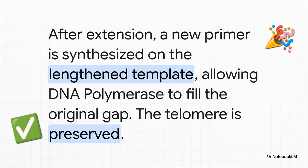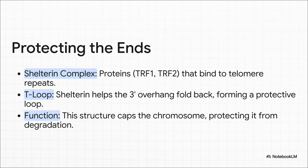And that's how it solves the problem. By extending the parental template, telomerase creates brand new real estate. Now the regular machinery — the primase — can come in and lay down one last primer on this newly extended bit. This provides the 3' hydroxyl group that was missing all along, which allows DNA polymerase to finally fill in that original gap completely. The end of the chromosome, the telomere, is saved. But the cell adds one final layer of protection: that newly synthesized telomere still has a long 3' overhang. So a complex of proteins called shelterin comes in, binds to all those repeats, and helps this overhang loop back and tuck itself into the double-stranded part of the chromosome. This forms a structure called a T-loop, which effectively puts a protective cap on the end of the DNA, hiding it from the cell's damage repair systems so they don't mistake it for a dangerous broken chromosome.